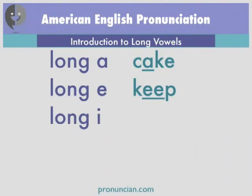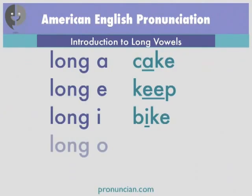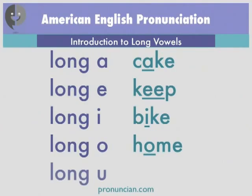The long I sounds like I, and is the vowel sound in the word bike — B, I, K — bike. The long O sounds like O, and is the vowel sound in the word home — H, O, M — home. The long U sounds like U, and is the vowel sound in the word cute — K, U, T — cute.